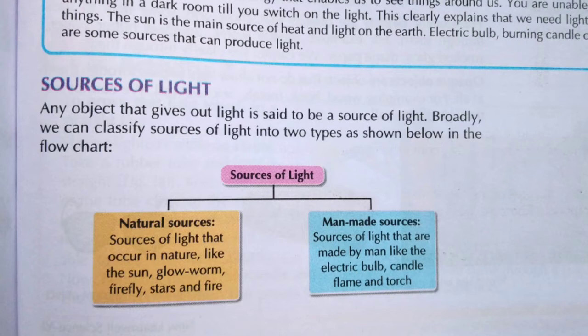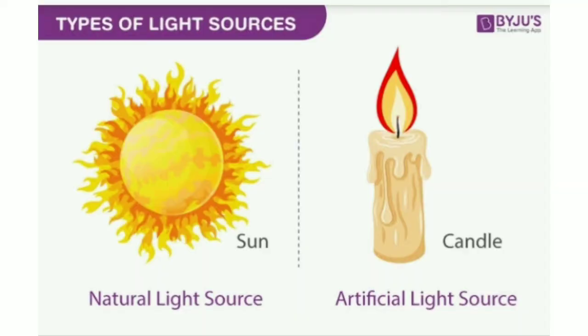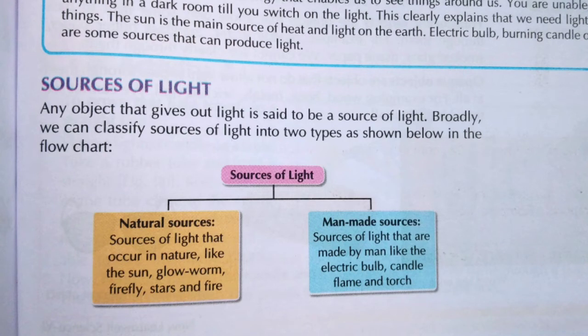Man-made sources are the sources of light that are made by man. Examples include electric bulb, candle, flame, and torch. So sources of light are of two types: natural sources, which come from nature, and man-made sources, which are the light sources we have created.